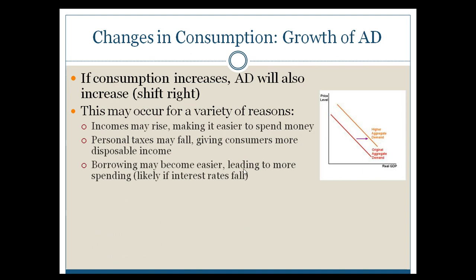If you have a situation where borrowing becomes easier, then people will also spend. Interest rates are a big part of that picture. When you have a shaky economy and aggregate demand is lower than you want it to be, one of the tools the government often uses in correlation with the Bank of Canada is to work toward getting interest lower and freeing up people to spend more money, because lower interest will encourage more consumption.